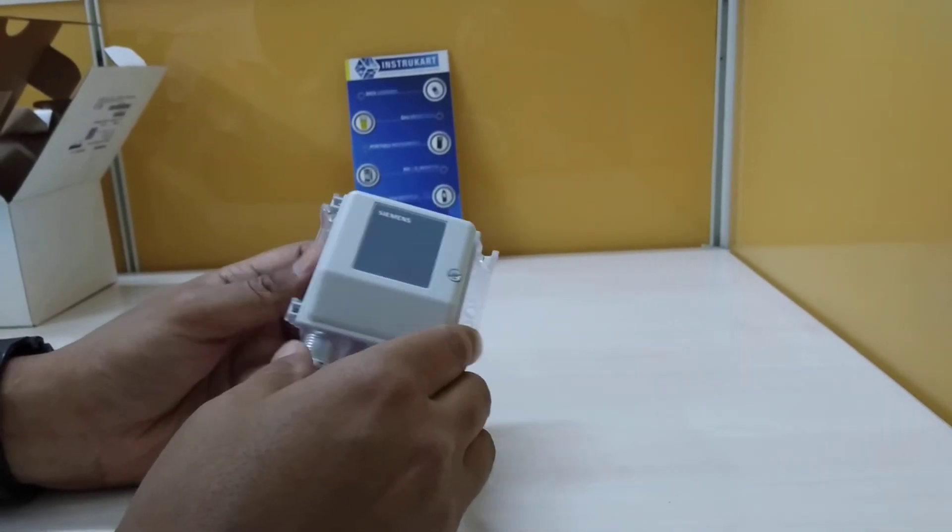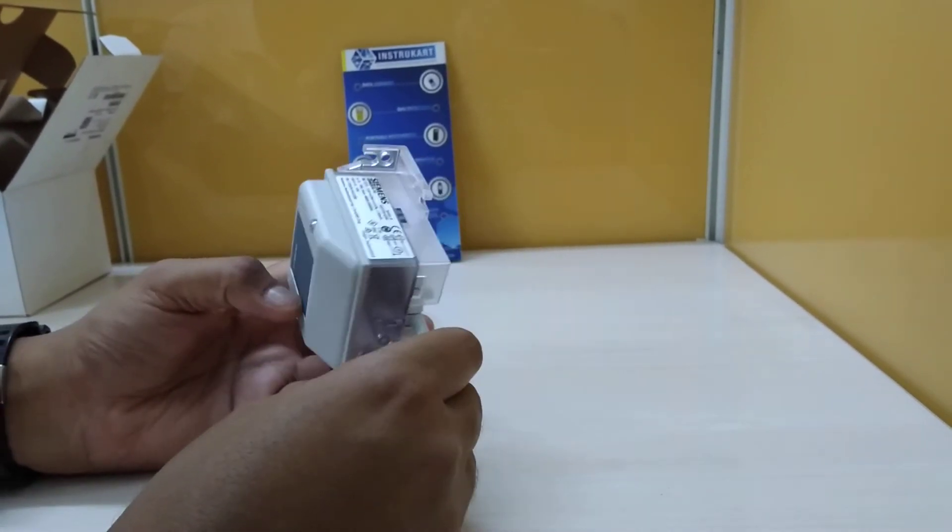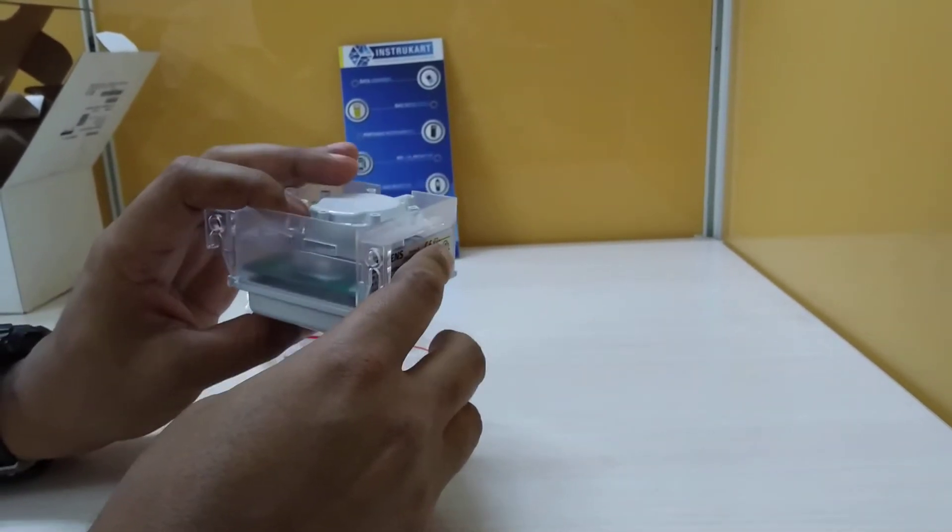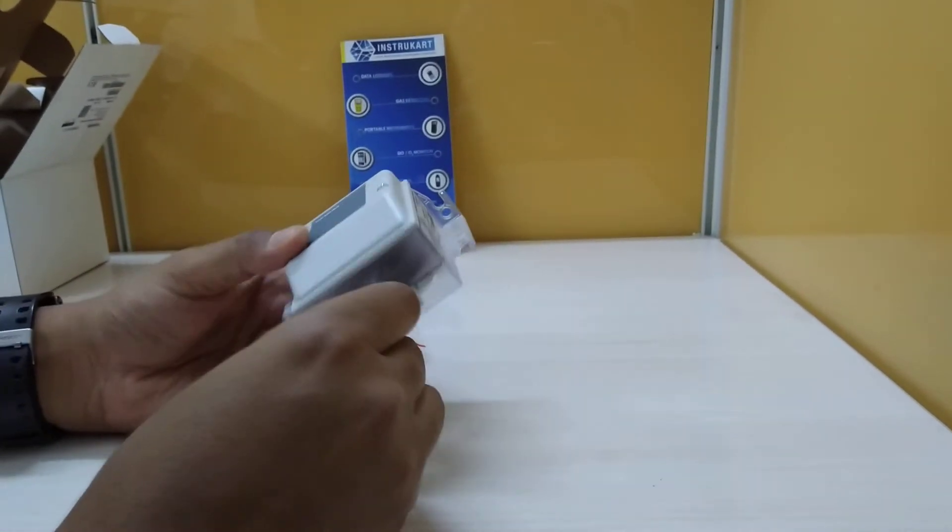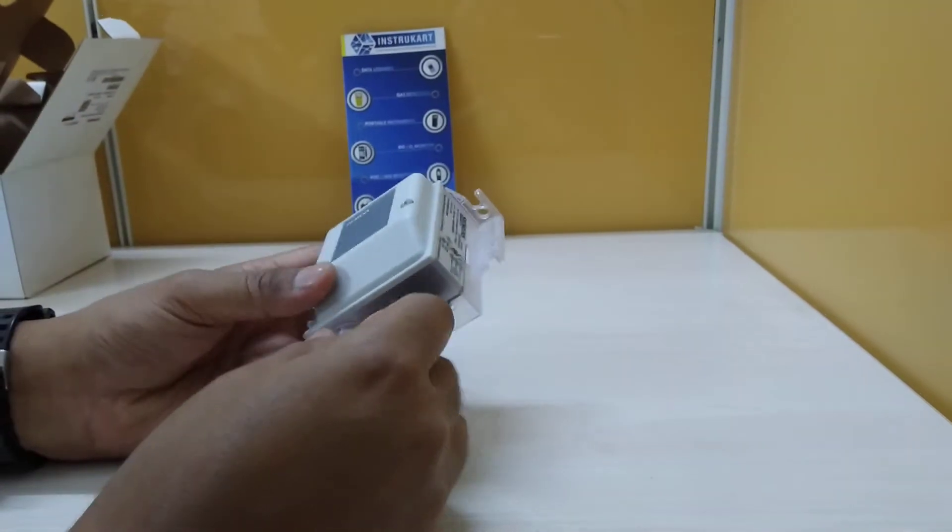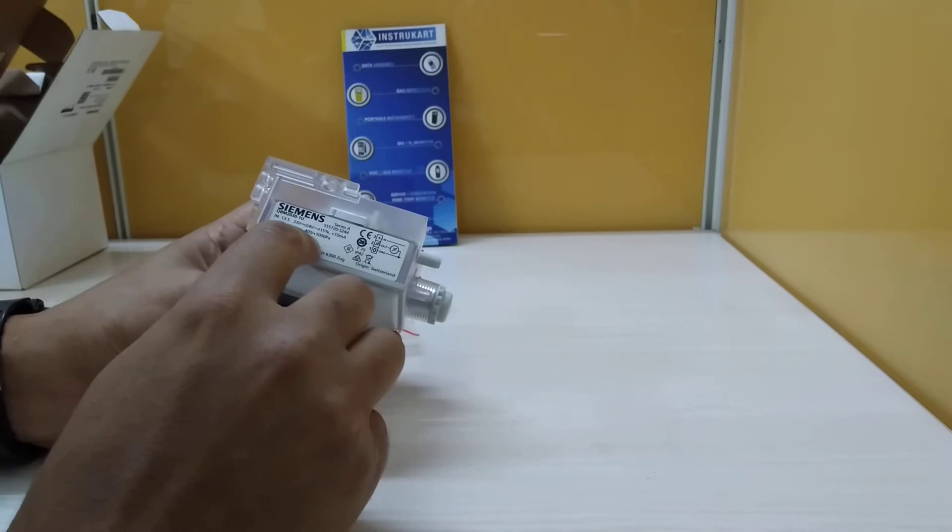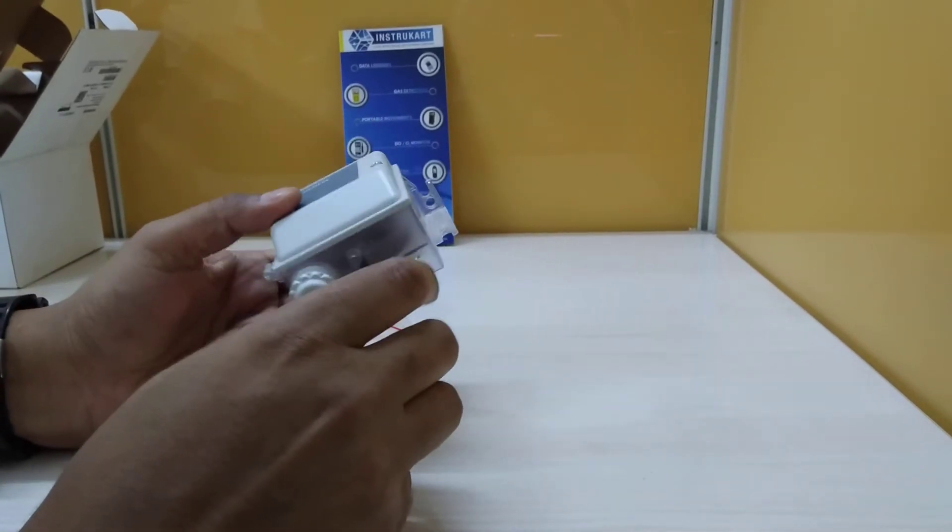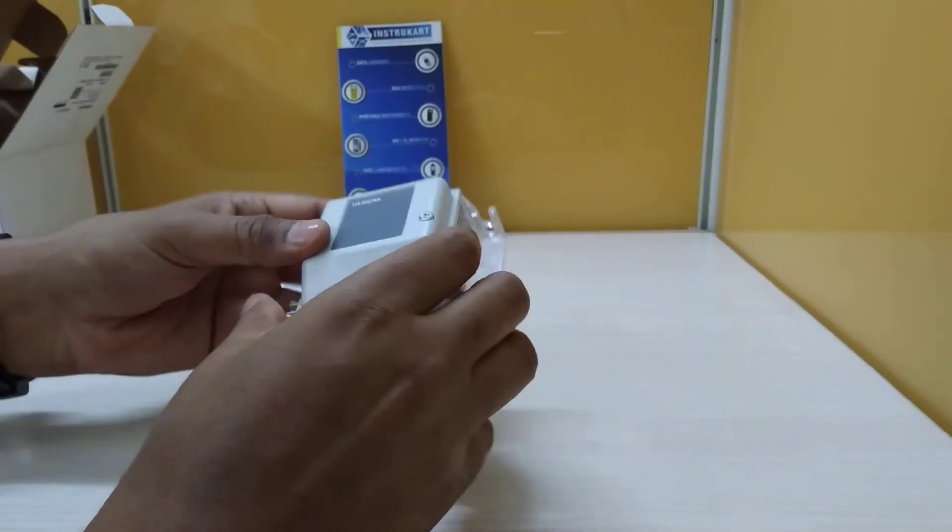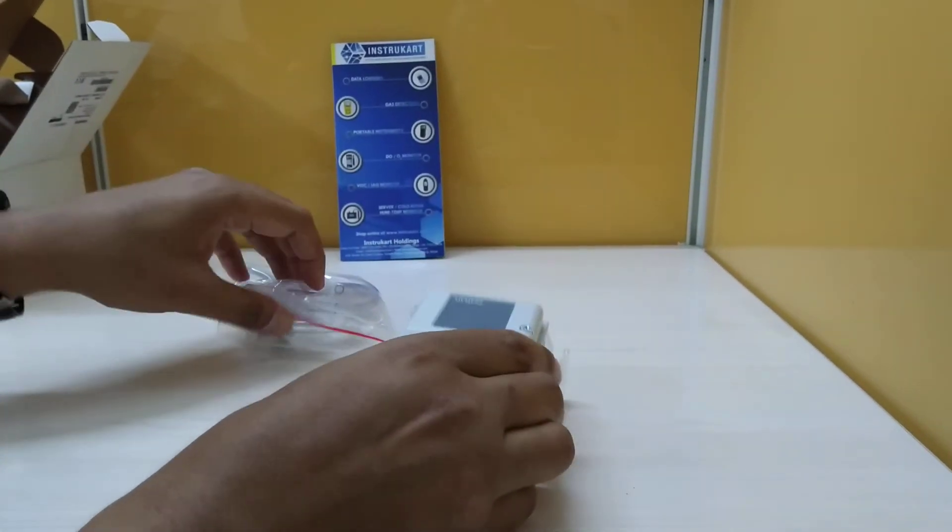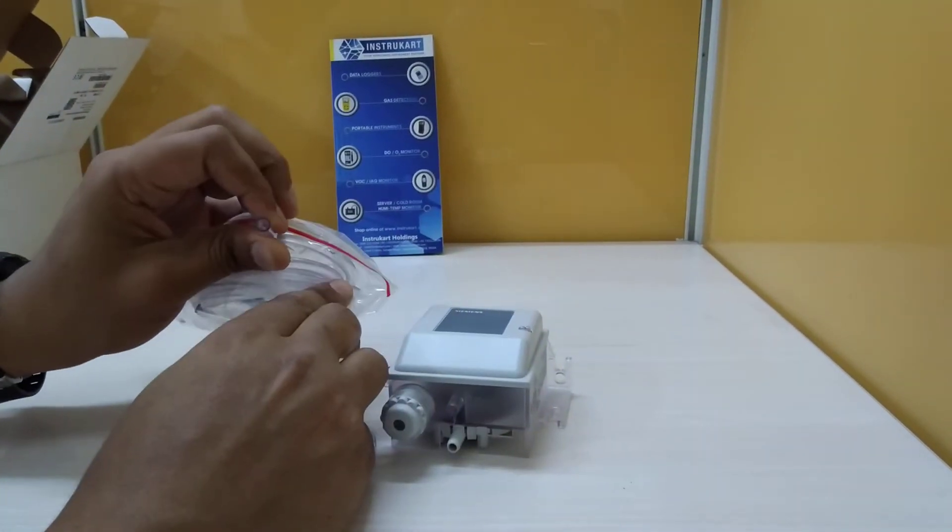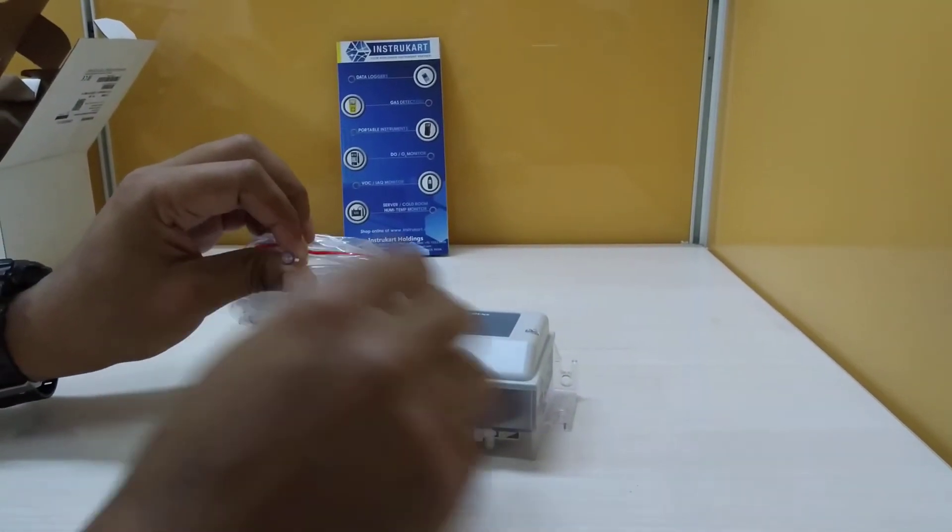This has a transmission option of 0 to 10 volts for transmitting your data, and with this instrument you get a hose pipe which you can use for your negative and positive pressure to validate the differential pressure.